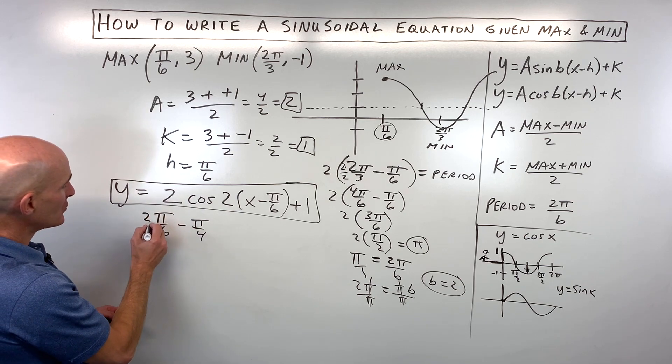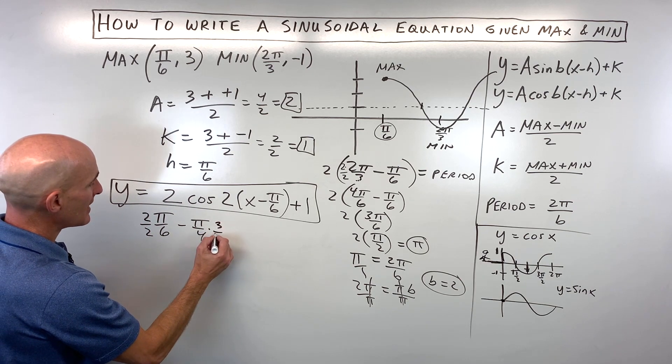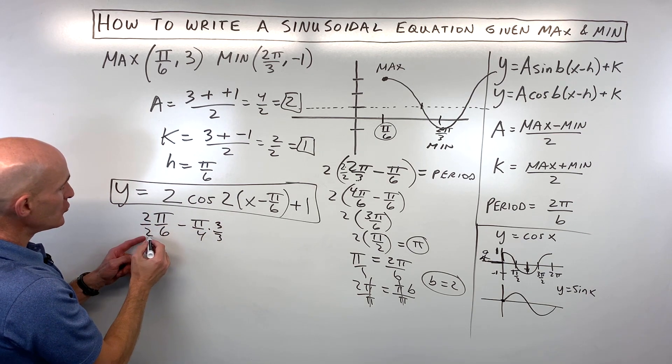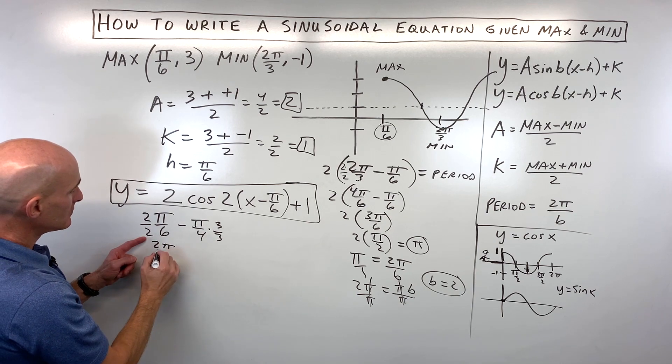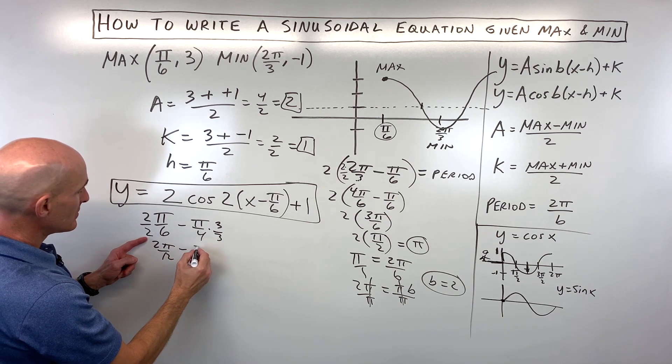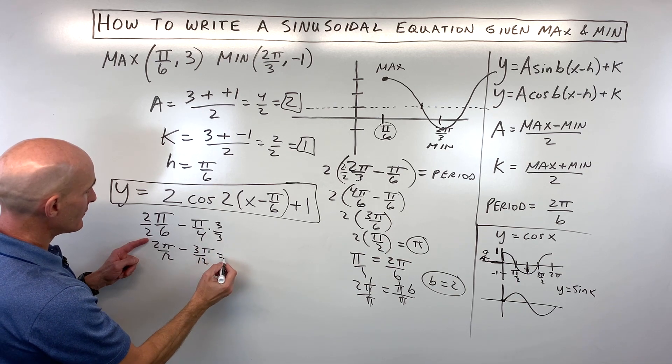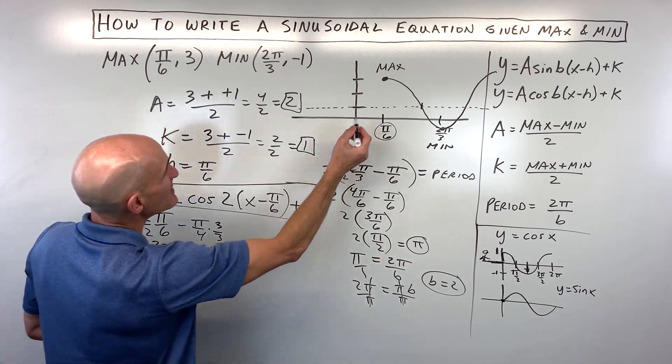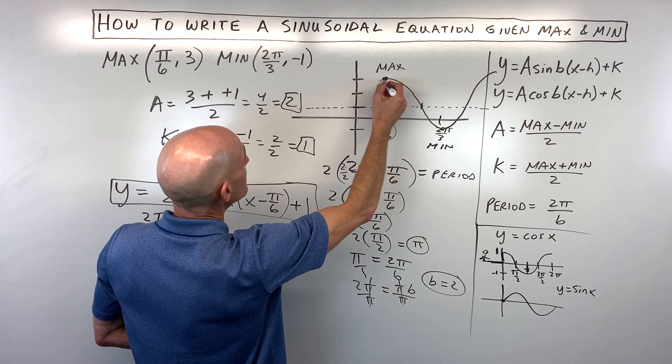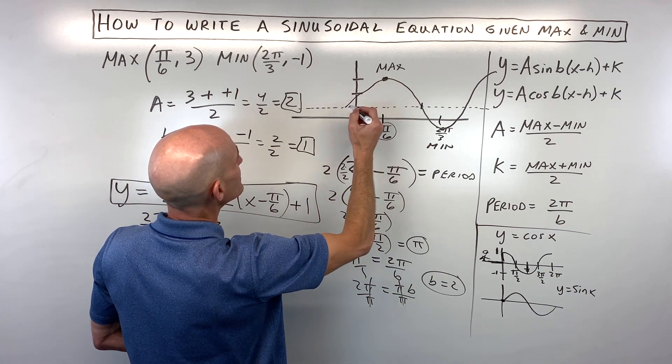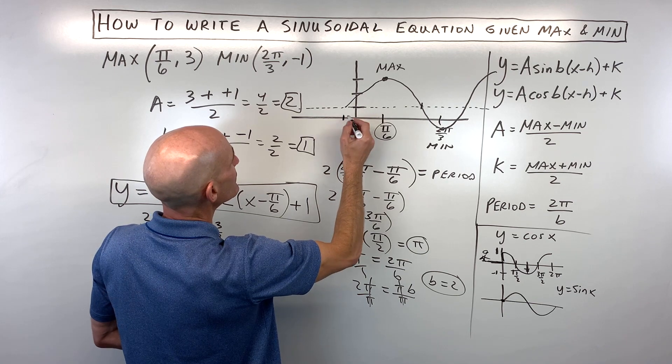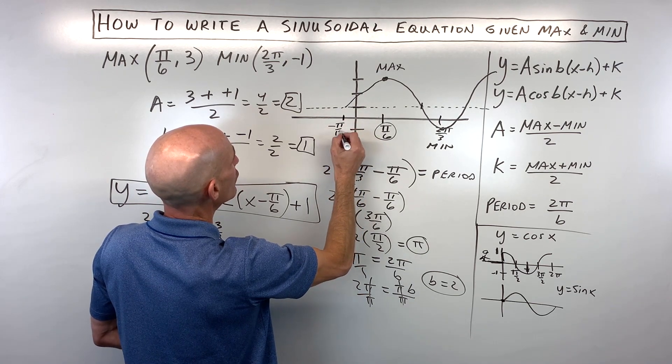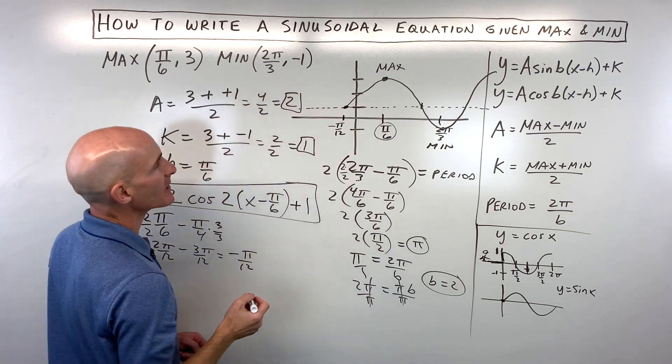We've got to get common denominators, so multiply top and bottom by 2, top and bottom by 3. So we have 2 pi over 12 minus 3 pi over 12 is equal to negative 1 pi over 12. That means that when I graph this, it's going to be something like this, right here, this point is negative pi over 12, and you're right at that midline. Now we're starting to see, this looks a little bit more like a sine graph from here to here.